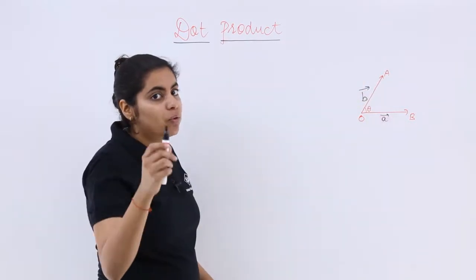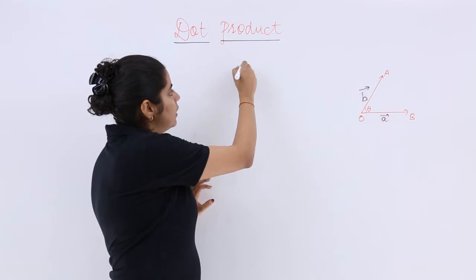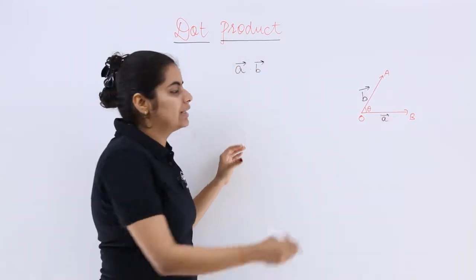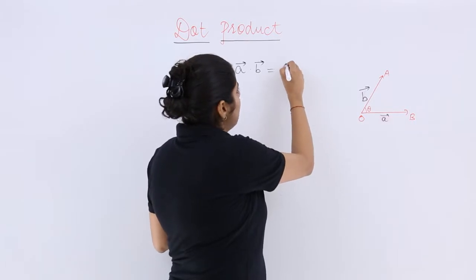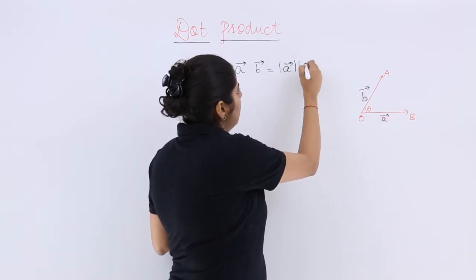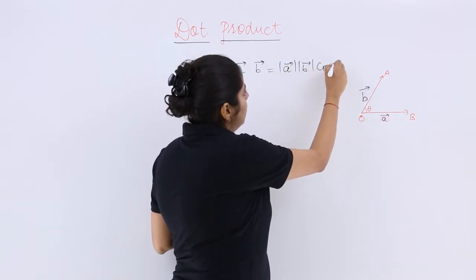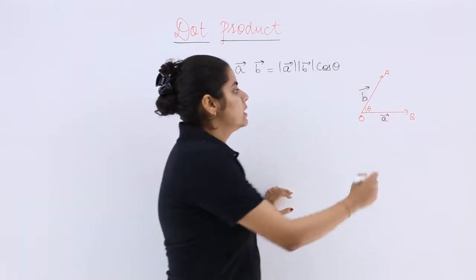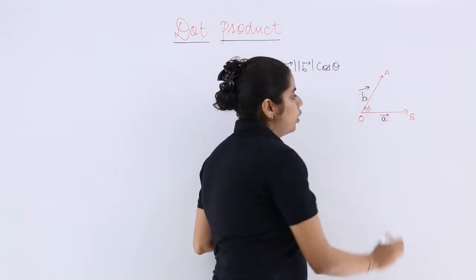If I have to say what is the scalar product of a and b vector? So a dot b vector is specifically known as a multiply by b multiply by cos of the angle between them. Now this angle is taken in the anti-clockwise direction.